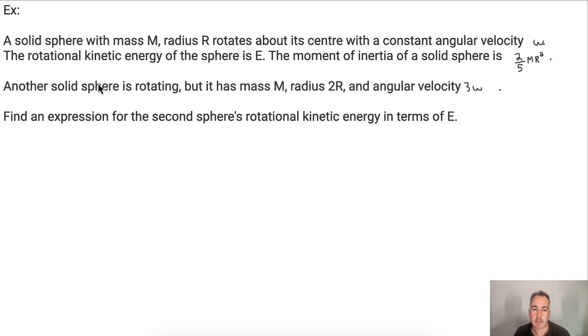And we're told now we have another sphere. This time, that one is also rotating, has a mass M, has a different radius, and a different angular velocity. The question is, let's find an expression for the second sphere's rotational energy in terms of E.